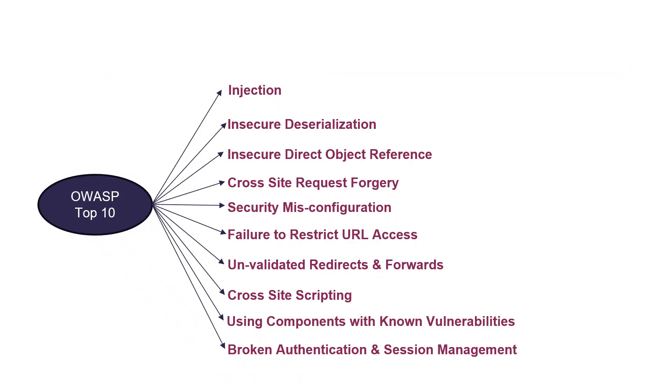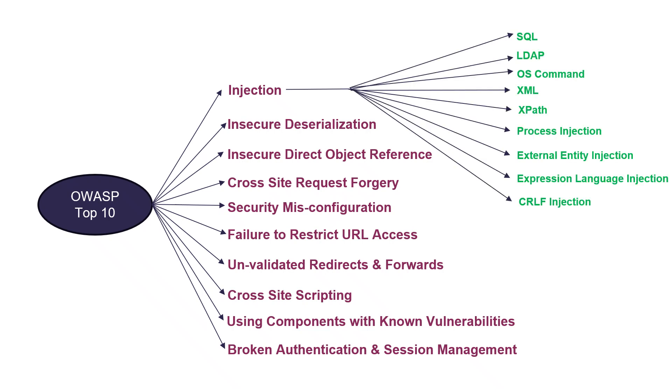We have injection, cross-site scripting, broken authentication and session management, insecure direct object reference, cross-site request forgery, security misconfiguration, failure to restrict URL access, unvalidated redirection forwards, insecure deserialization, using components with known vulnerabilities. Some of these can be split down further but injection has the most subclasses. Let's break injection and cross-site scripting for today's learning.